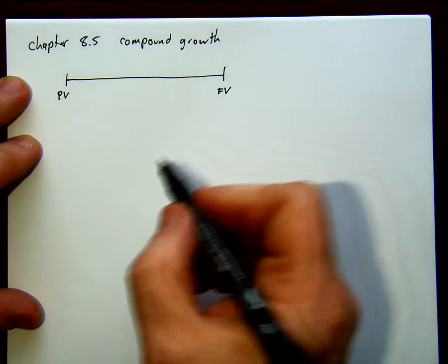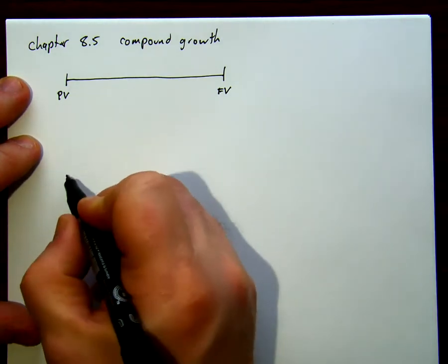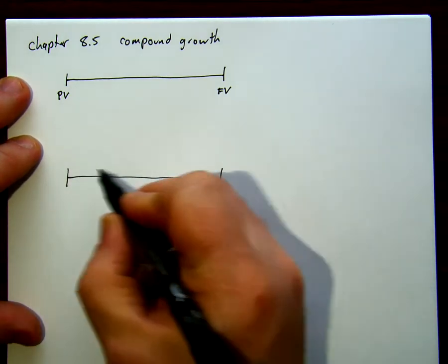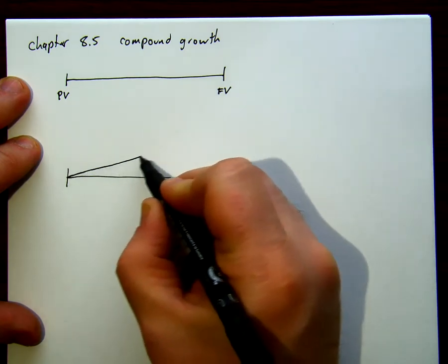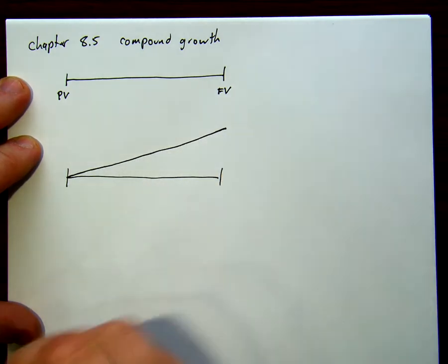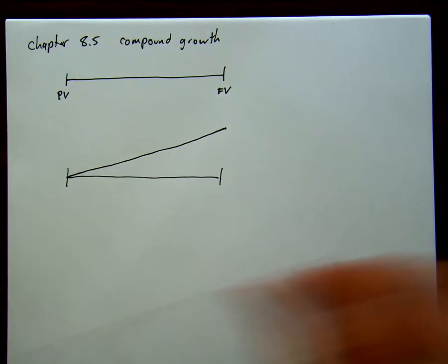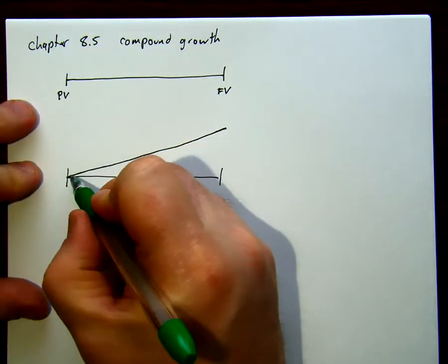We know that we get interest on interest, so in a simple interest problem, we had growth that was completely linear from one to the other. When we look at a compound interest problem, we're getting interest on interest, so it's going to start off the same for the very first term.